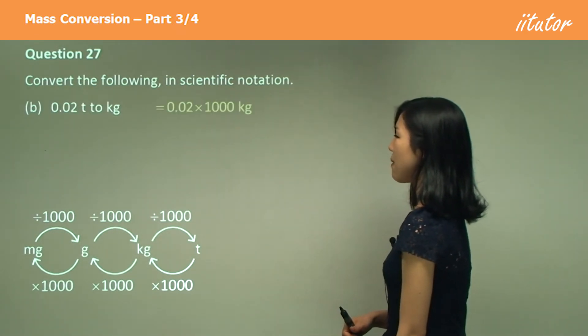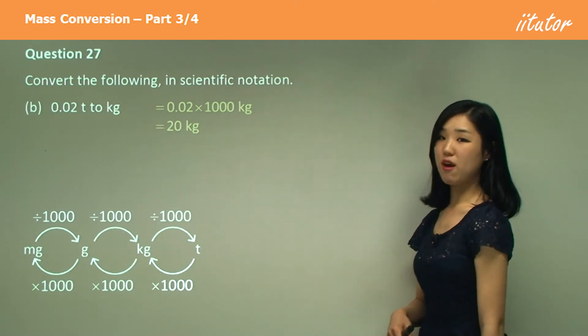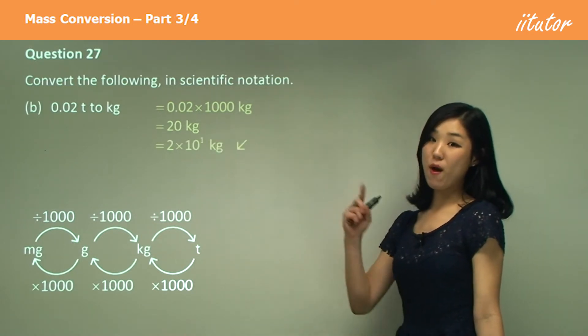Okay, again, multiply by a thousand, getting 20 kilograms, which is simply two times ten or two times ten to the power of one.